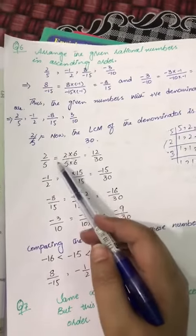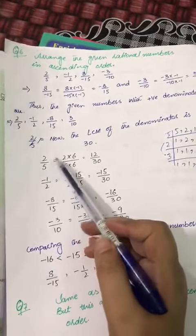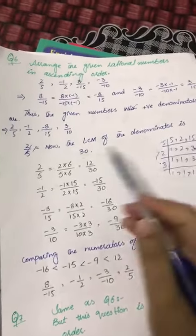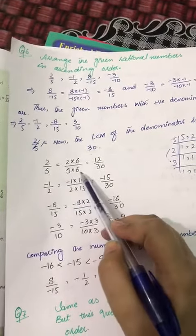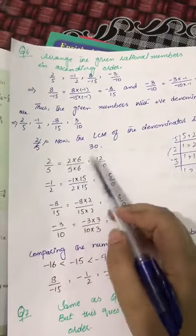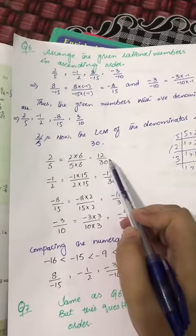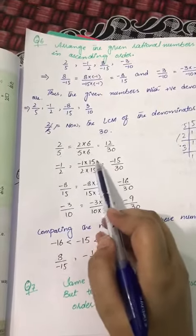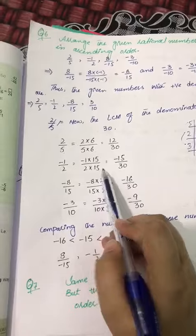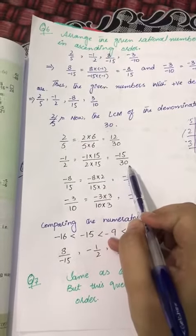So what should we do? 2 by 5 is equal to 2 multiplied by 6 and 5 multiplied by 6, which gives 12 over 30. Minus 1 by 2: minus 1 multiply by 15 and 2 multiply by 15, minus 15 over 30 is the answer.